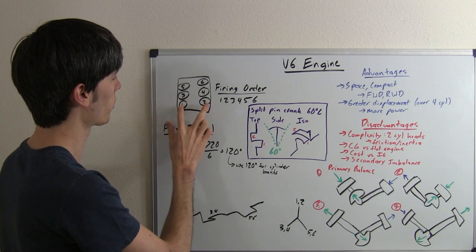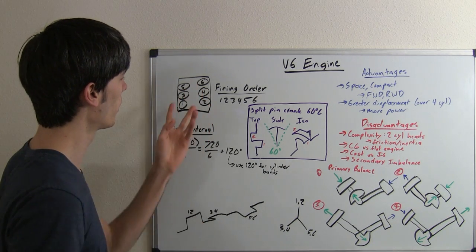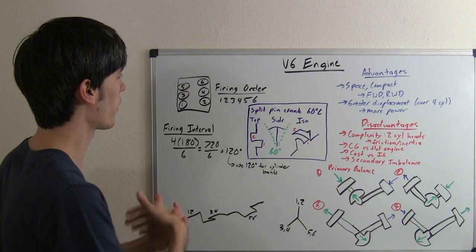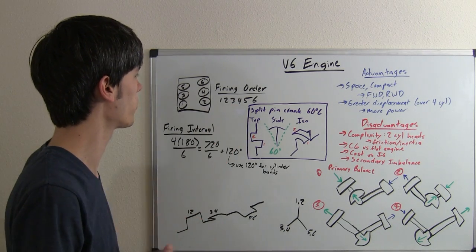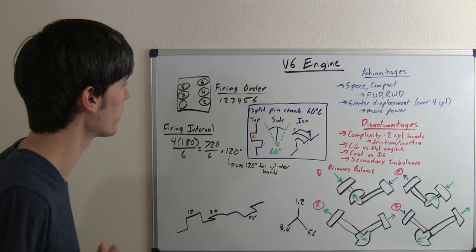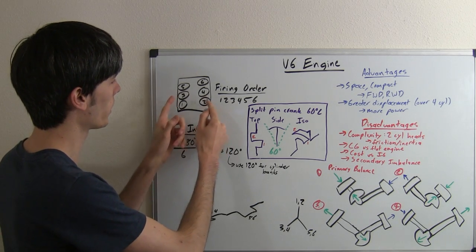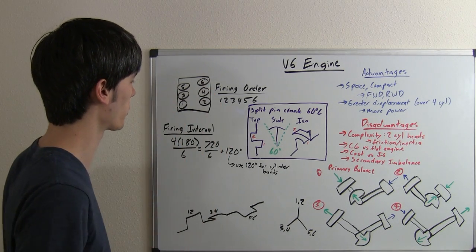But basically the numbering system is going to be 1, 2, 3, 4, 5, 6, down the way back. And the firing order finally makes sense. It's very simple to remember. It's 1, 2, 3, 4, 5, 6. So it will fire left, right, left, right, left, right, and then back up to the front.